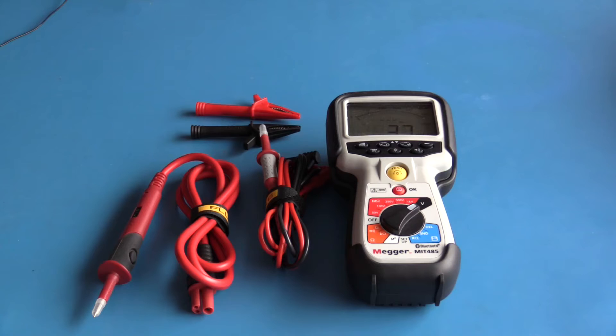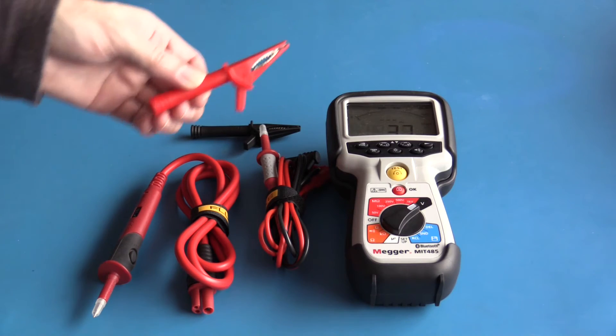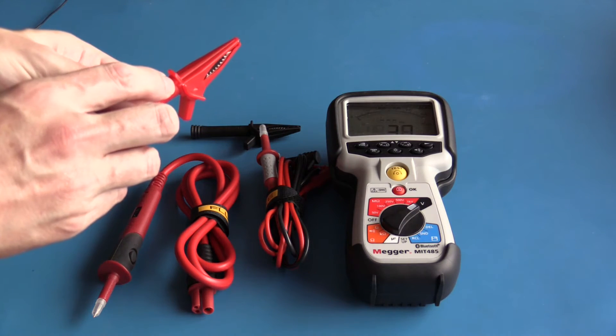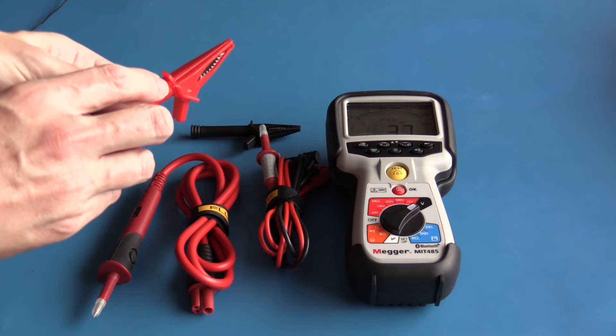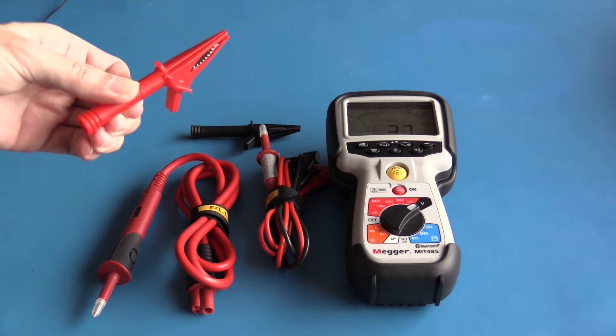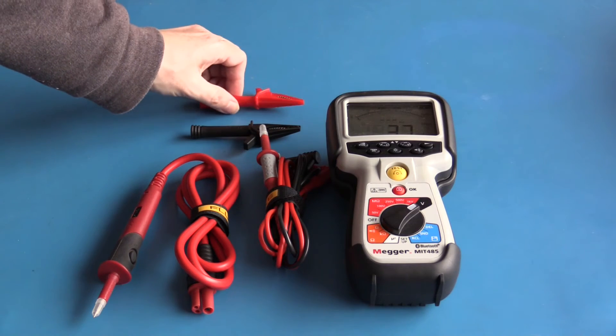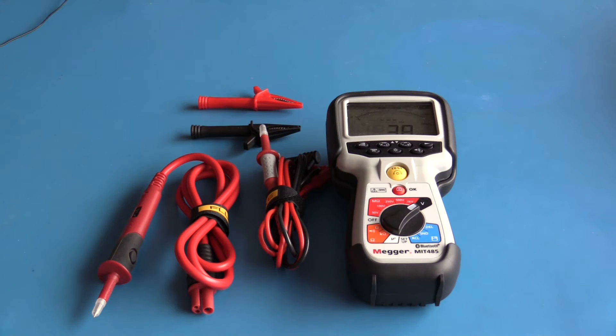It also came with these two alligator clips. These alligator clips push on over the top of the probes. Mine came with a broken corner on the test clip. Over time test accessories do get damaged, but I would not have expected any damage out of the box. This tells me that the plastics used are probably quite brittle.